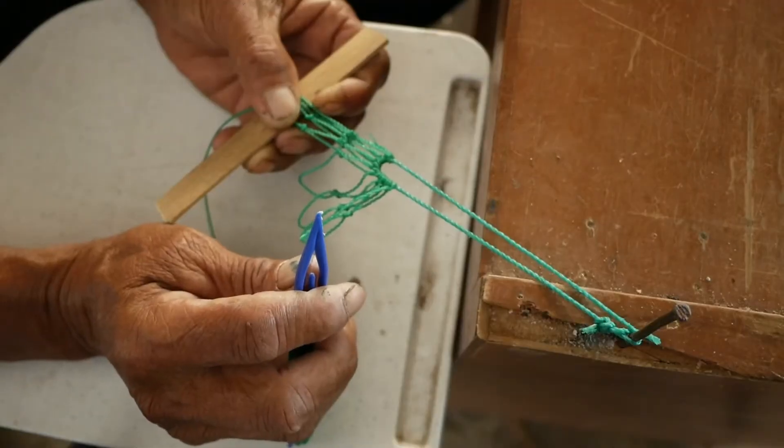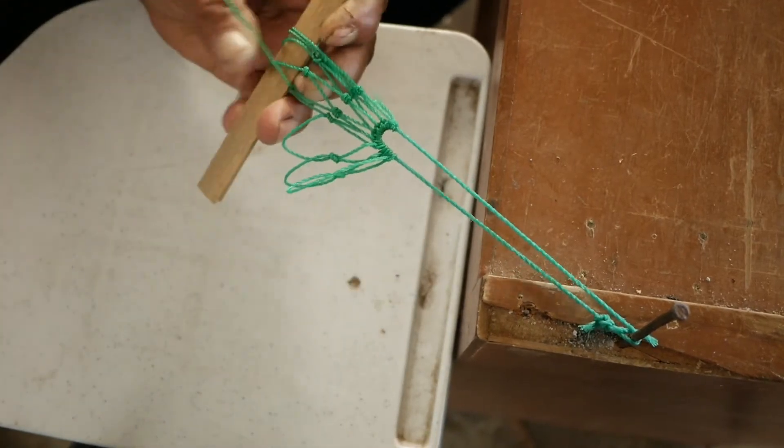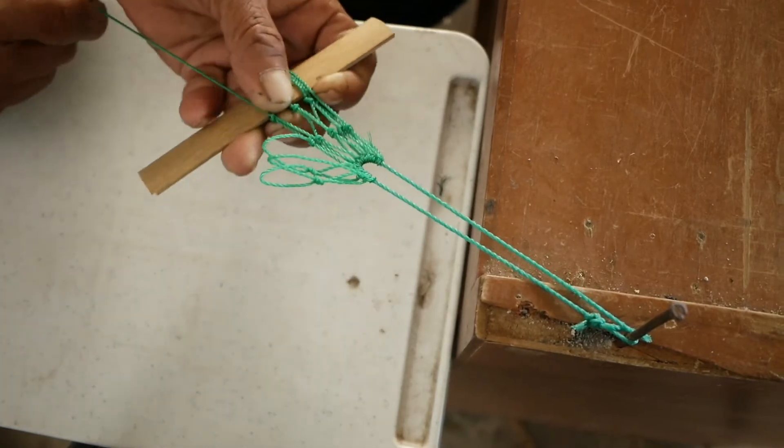The sheet bend is relatively straightforward to perform than the square knot. You might want to compare the sheet bend performed here to the previous knot tying video to confirm.